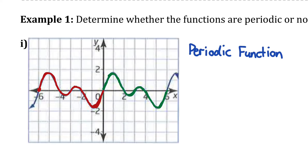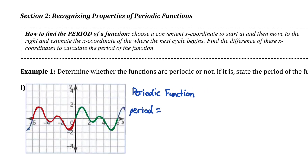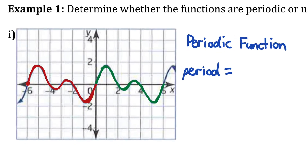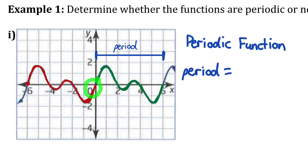For any periodic function, we can state its period. To find the period, we're looking for the horizontal length of one cycle. We choose an x-coordinate for the start of a cycle, move to the right, and find the x-coordinate where the next cycle begins, then find the difference. Looking at the green cycle, it starts at an x-value of 0 and finishes at 6, so the period of the function is 6.